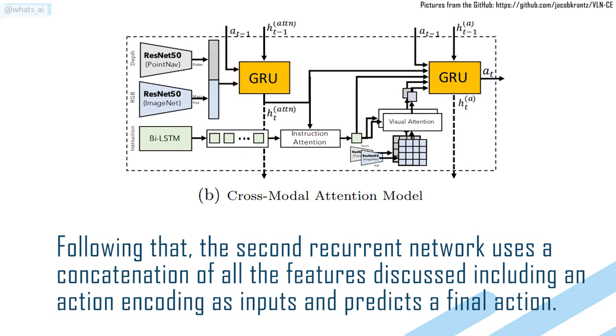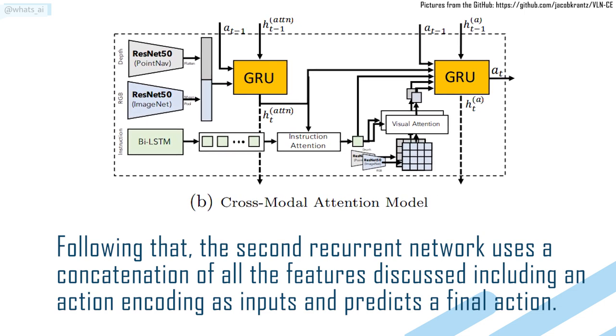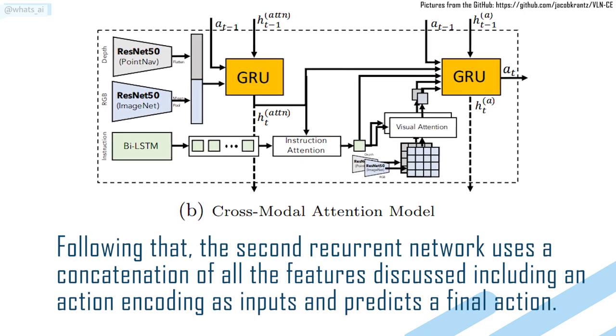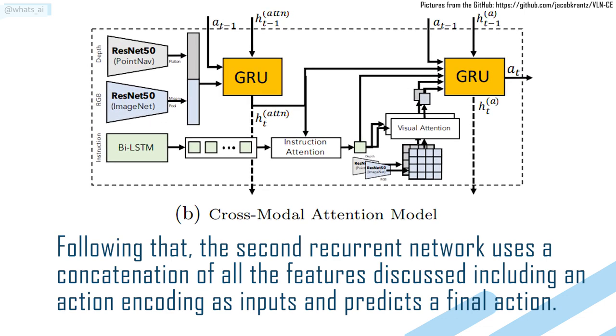Following that, the second recurrent network uses a concatenation of all the features discussed, including an action encoding as inputs and predicts a final action.